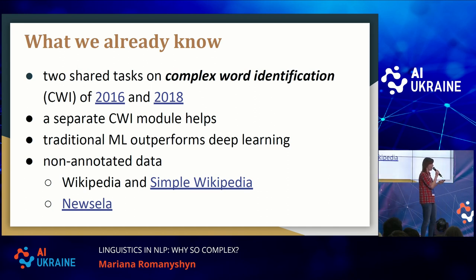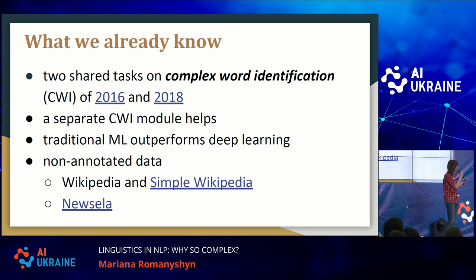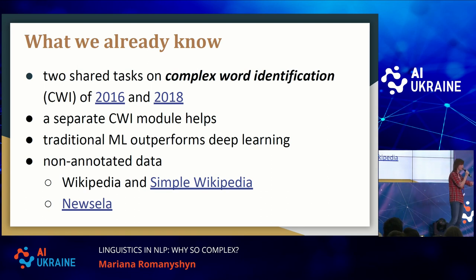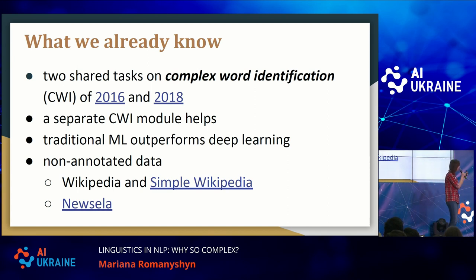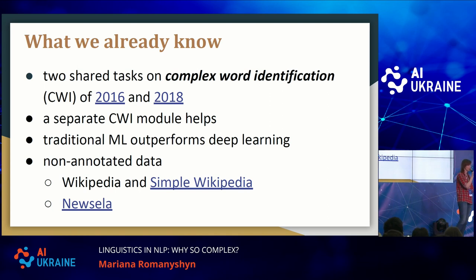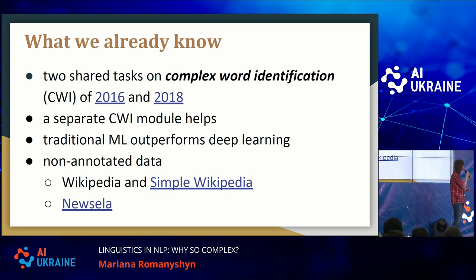The first thing any researcher would do is find out what is already out there — what we already know. There were two shared tasks in academia on complex word identification — identifying complex vocabulary — in 2016 and 2018. What they found is that a complex word identification module helps when you want to do lexical simplification. If you have two steps — first identify, then simplify — you can get better results.